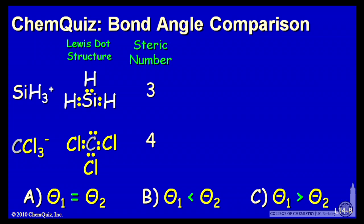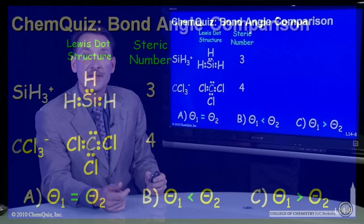This carbon in CCl3- has to accommodate one, two, three, four things: three chlorines and a lone pair. Steric number four.